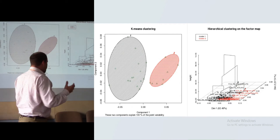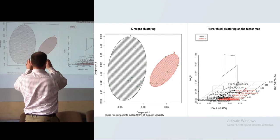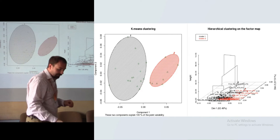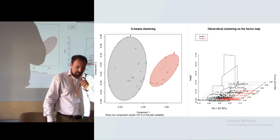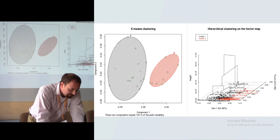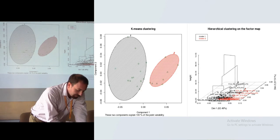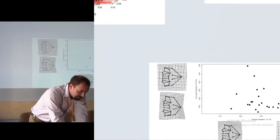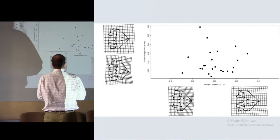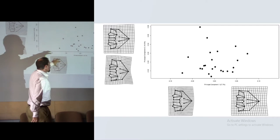But the question is, what do these groups mean? Well, geometric morphometricians usually call the first axis of the principal component analysis in morphometrics the axis of sexual dimorphism.